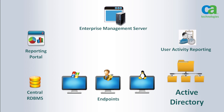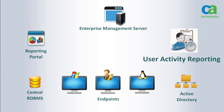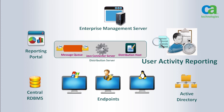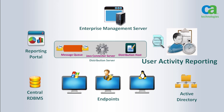One final component is the CA User Activity Reporting module agent. It collects events from the audit queue on the distribution server and sends the audit events to the CA UARM server for processing, storage, analysis, and reporting. If you want to report on auditing data, you must integrate CA UARM into your environment.